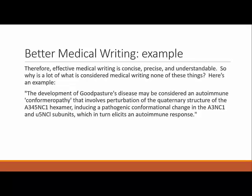Therefore, effective medical writing is concise, precise and understandable. So why is a lot of what is considered medical writing none of these things? Here's an example: 'The development of Goodpasture's disease may be considered an autoimmune conformiropathy that involves perturbation of the quaternary structure of the A345NC1 eczema, inducing a pathogenic conformational change in the A3NC1 and U5NCL subunits, which in turn elicits an autoimmune response.' The author is suffering from conformiropathy to good writing, and my autoimmune response is to throw the paper into the recycling bin. There may well be an important point about Goodpasture's disease buried in there somewhere, but what's wrong with stating it clearly and using real words?